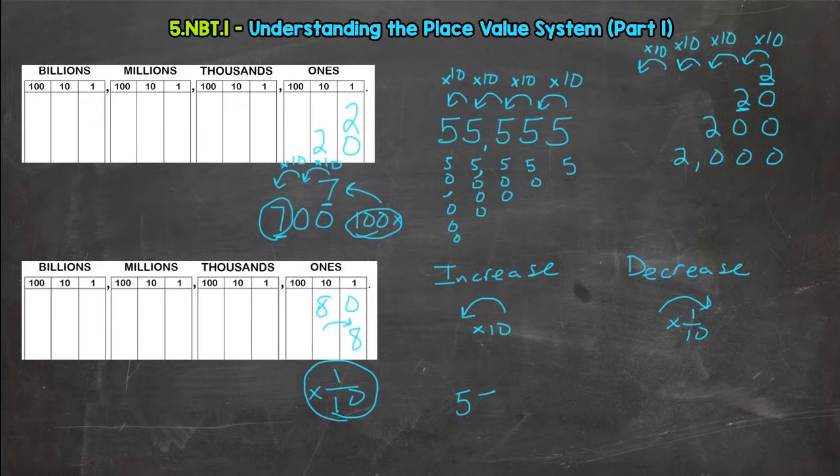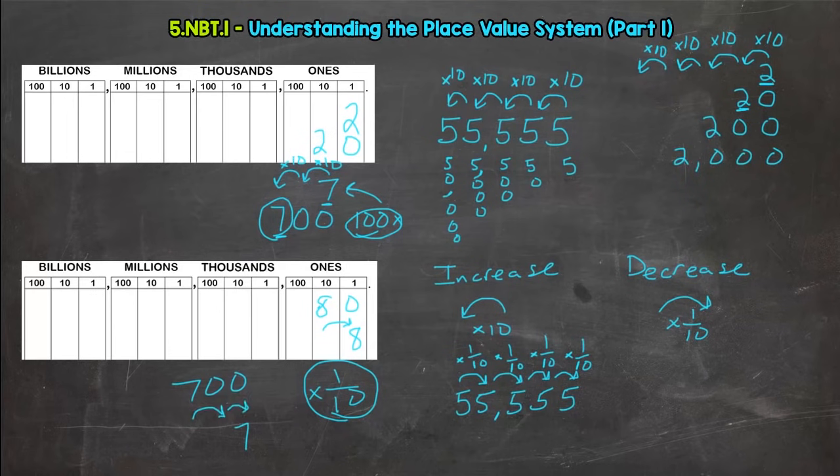That same example: we'll do 55,555. Every jump to the right, that five decreases in value by one-tenth. So two jumps at one time would be one one-hundredth, right? The opposite of increasing the value by 100. Let's take that seven hundred and the seven, take that seven and push it two places to the right, which would be one-tenth by one-tenth, which is one one-hundredth.